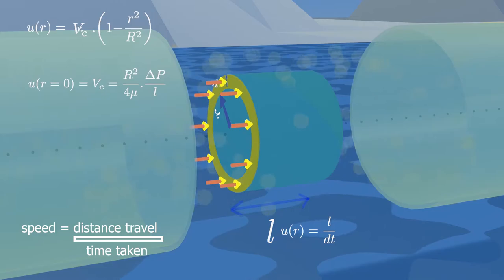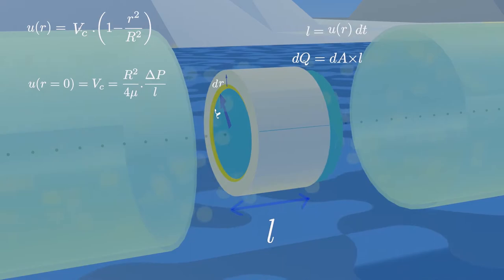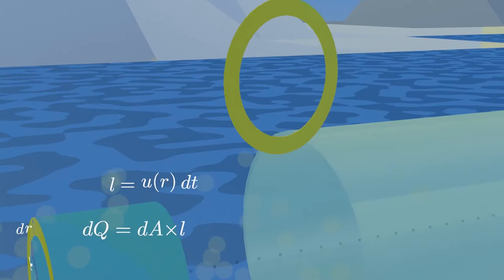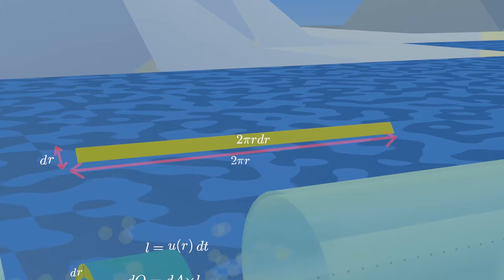Within the time dt, the fluid covers the distance l equals v dt. And the liquid takes up the volume of area times length. The area of this circular segment is 2 pi r times dr.